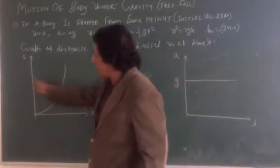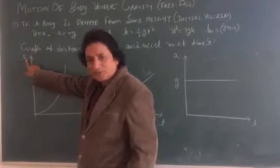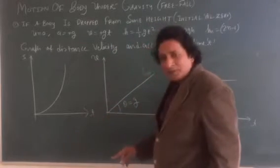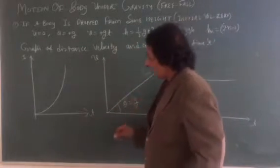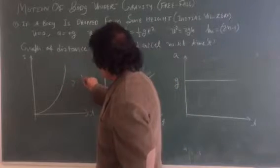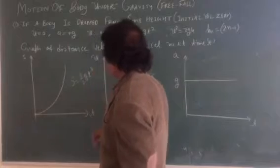First of all, I am taking graph of distance with time. Distance is half g t square: s or h equal to half g t square.